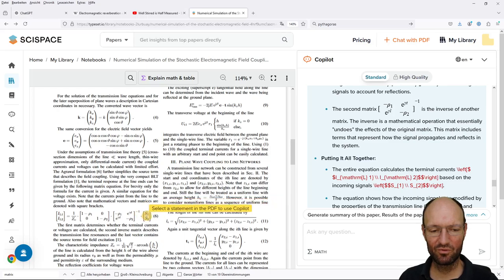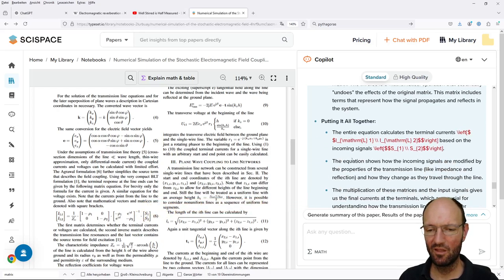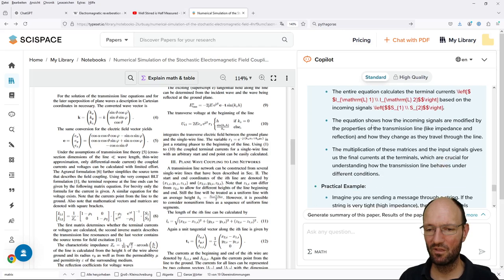This is also important, don't forget this one here. Putting it all together: incoming signals are modified by the properties of the transmission line.